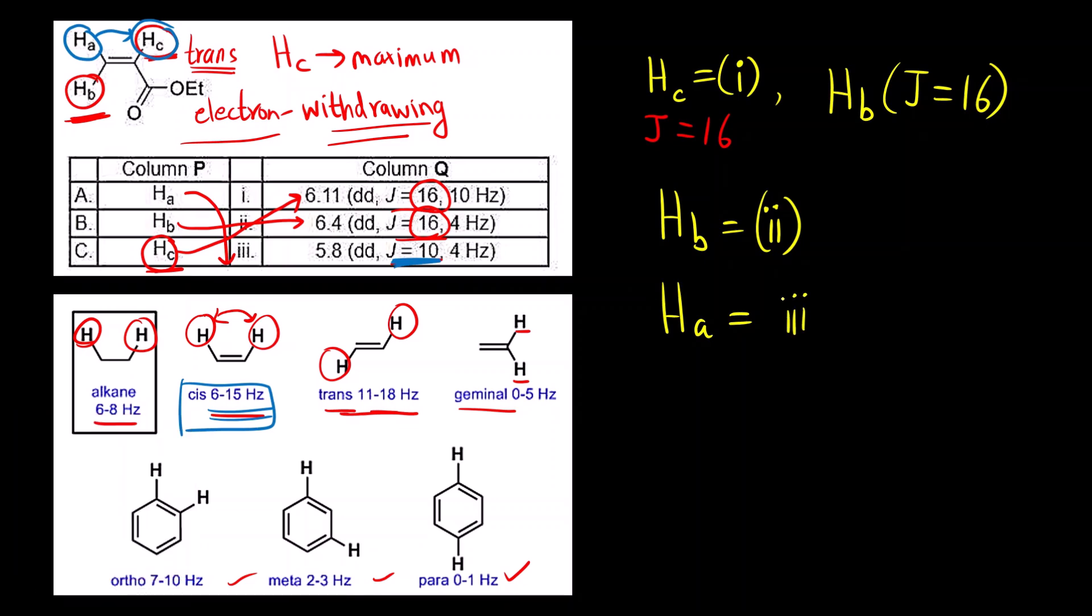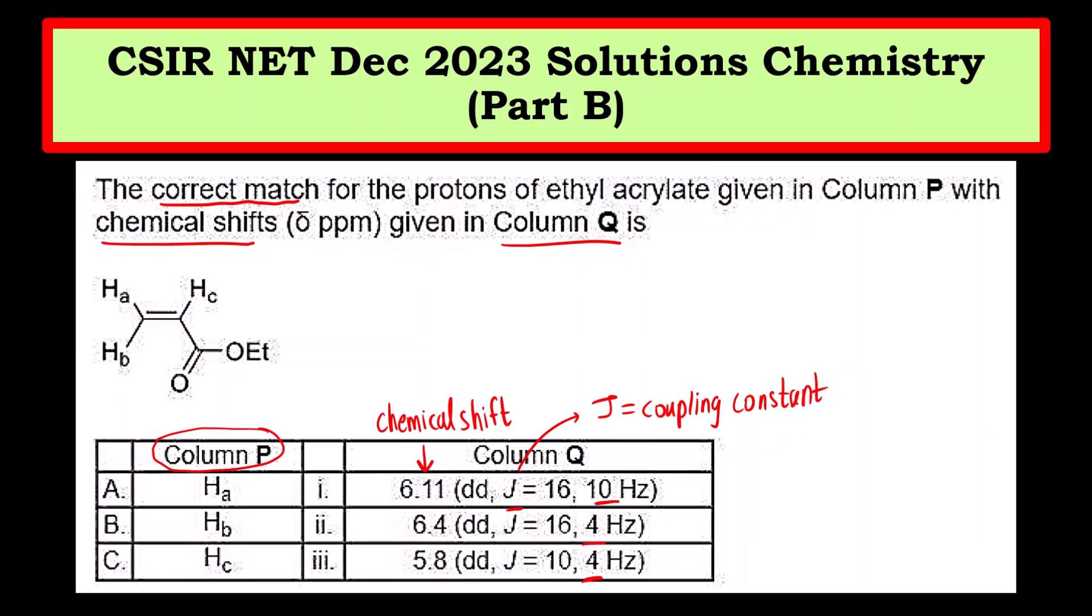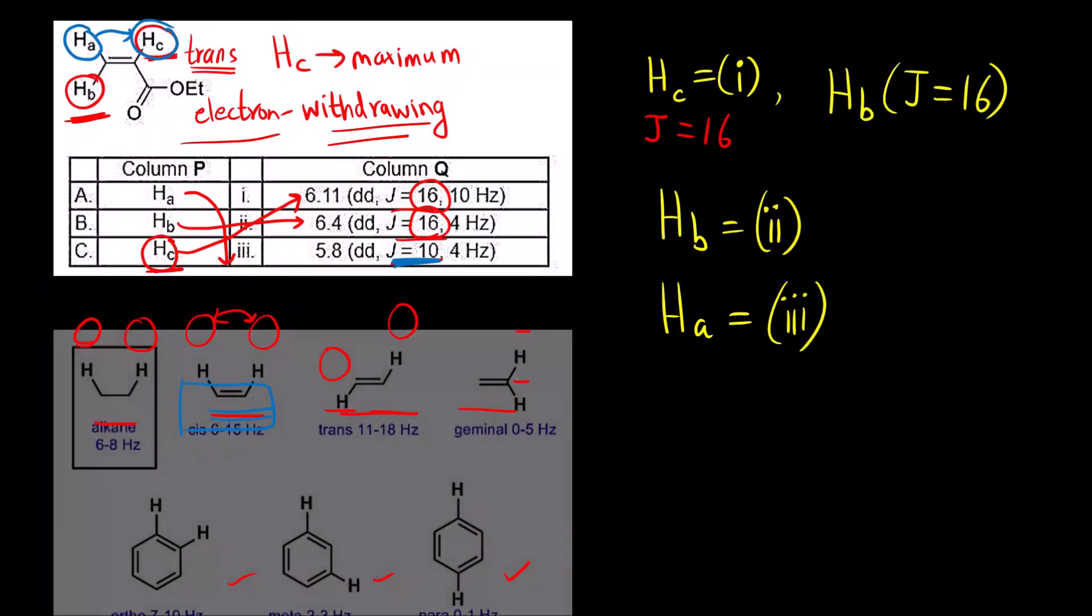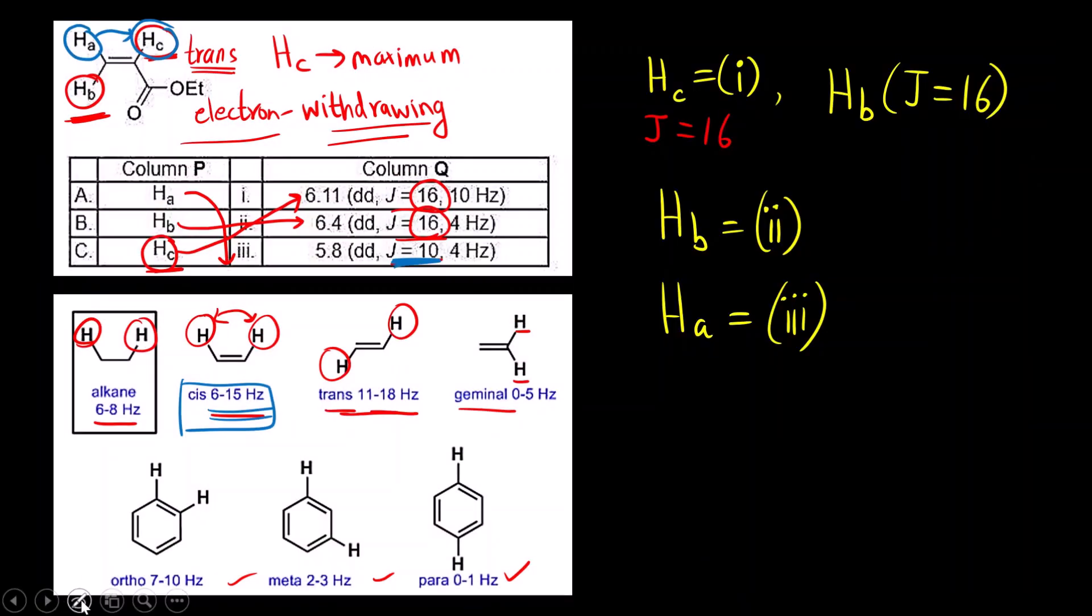Correct answer is 3. Which is going to be the correct option? I have not mentioned the options. I will write down the final answers here. For A, it will be 3. For B, it will be 2. And for C, it is 1. So the correct answer will be 3, 2, 1.